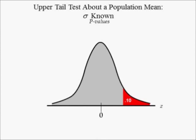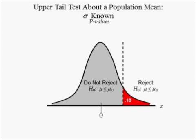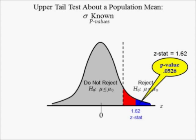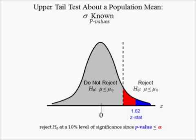Since this is an upper tailed test with a significance equal to 0.10, the upper tail of the distribution is shaded in red and labeled 0.10. This tail defines the do not reject the null hypothesis and reject the null hypothesis regions. The blue tail probability is smaller than the red tail probability because the Z-stat of 1.62 has a P-value equal to 0.0526, which is smaller than 0.10. When the P-value, the blue area, is smaller than alpha, the red area, we reject the null hypothesis at a 10% level of significance. Notice that the Z-stat is in the reject the null hypothesis region.